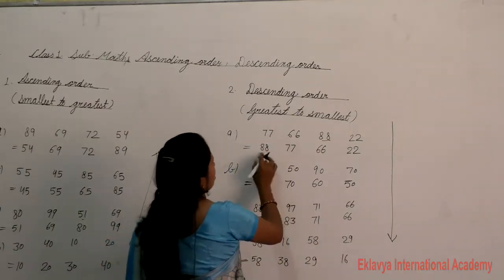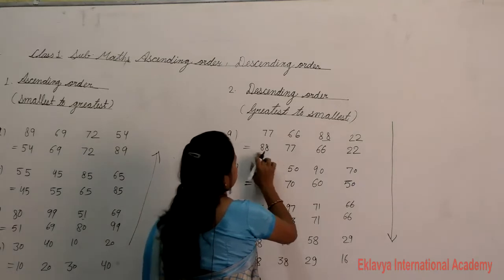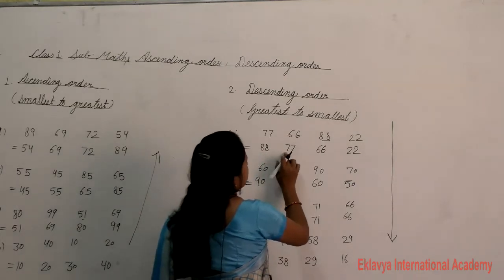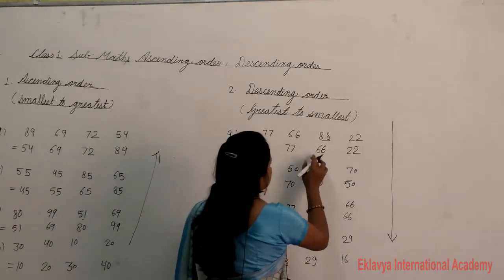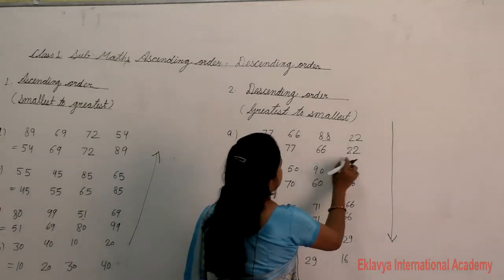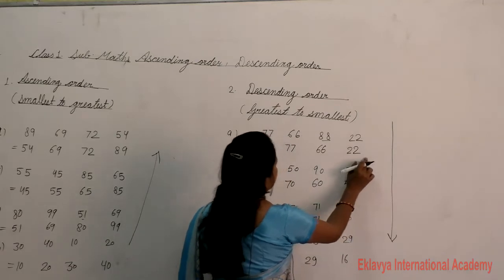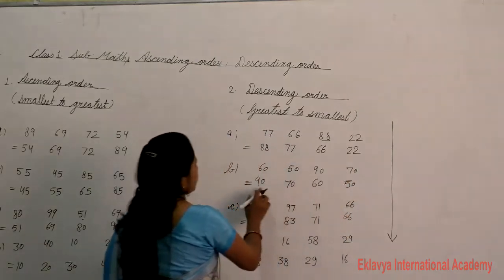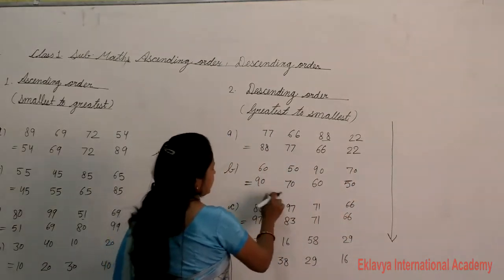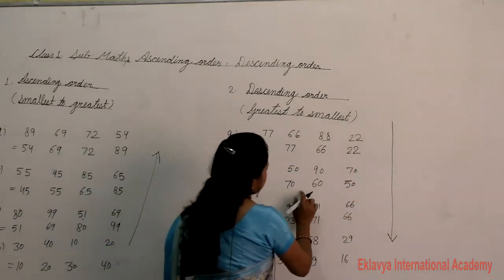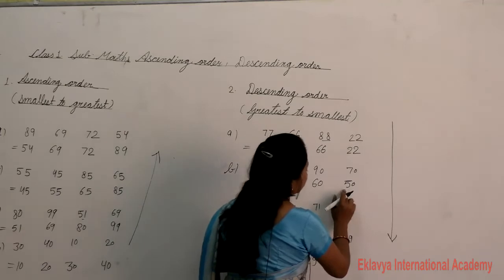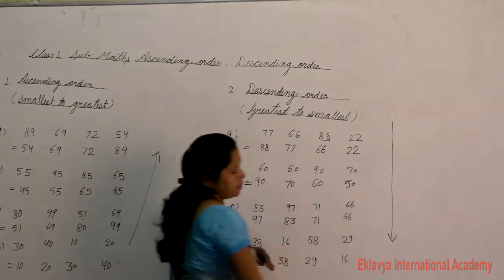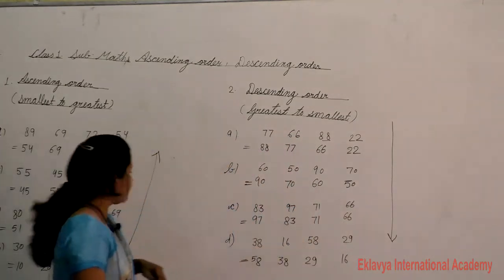Greatest to smallest: 98, 77, 66, and 22. And next example: 90, 70, 60, and 15.